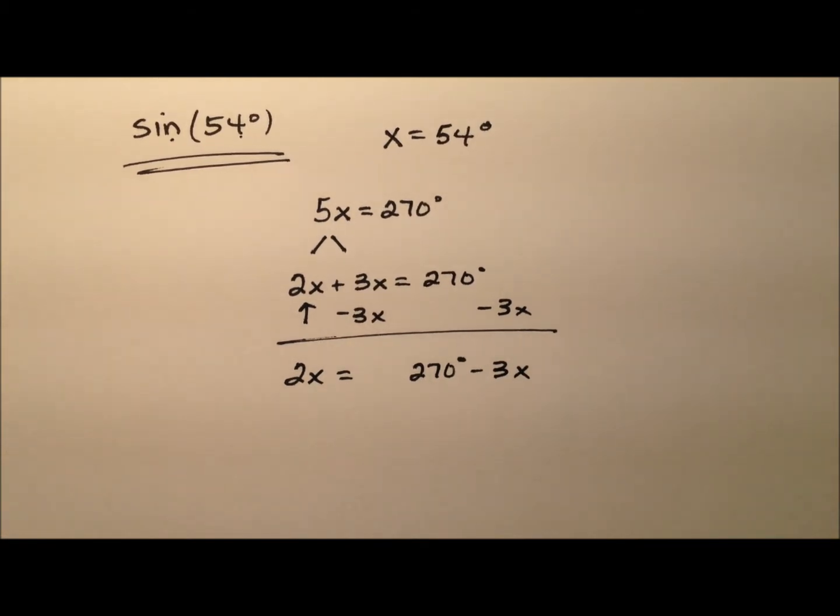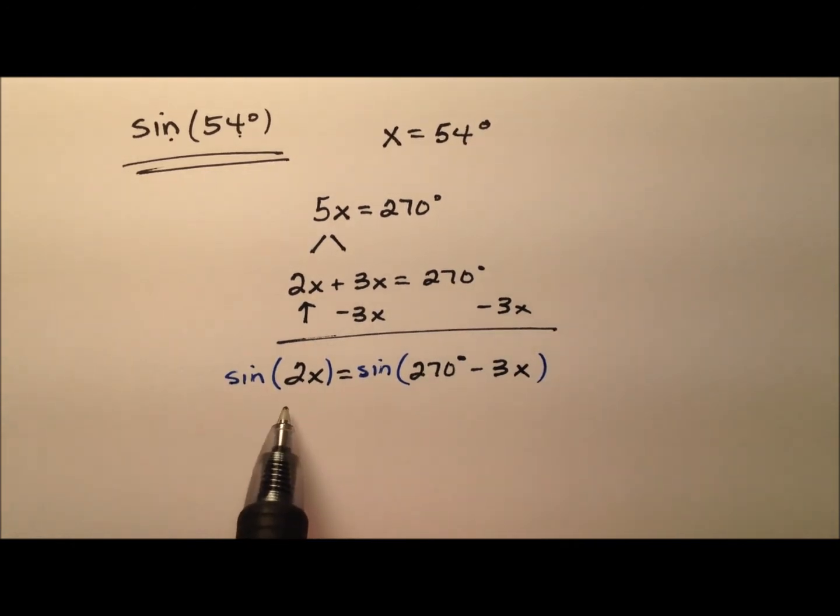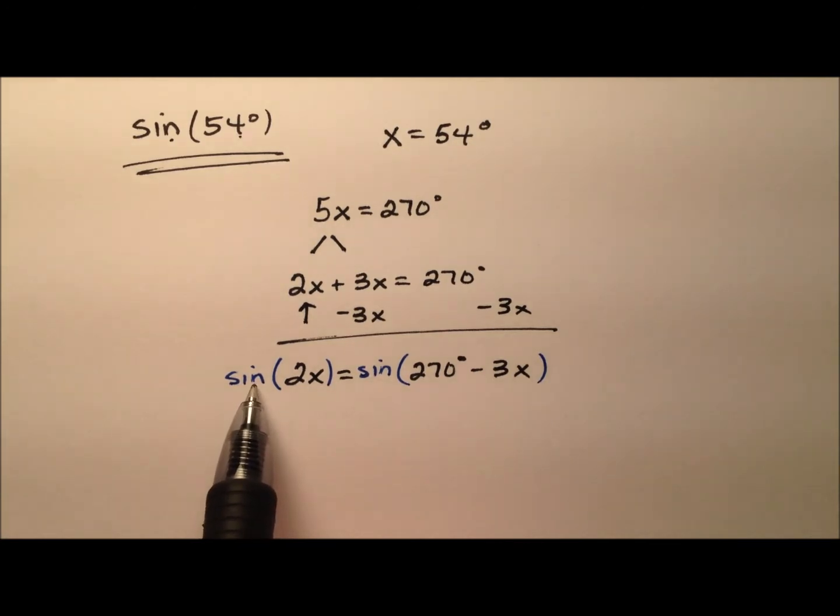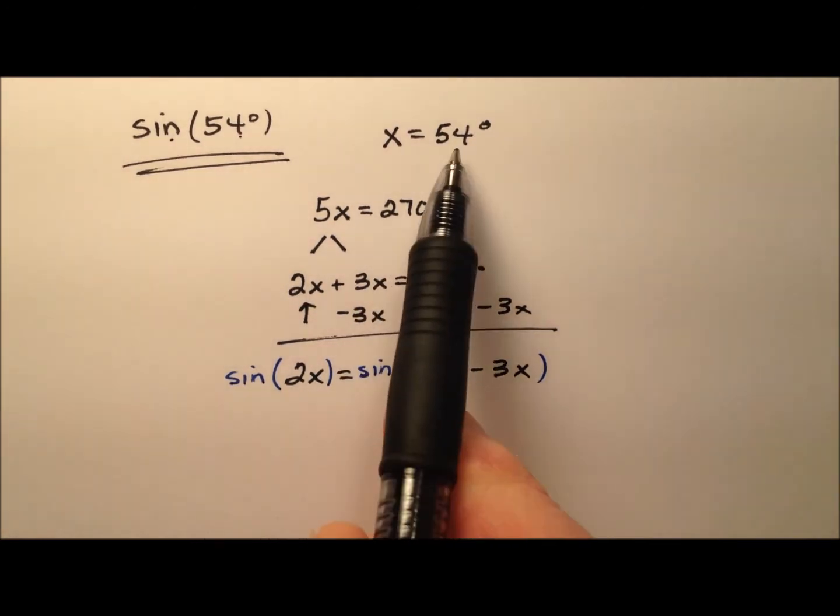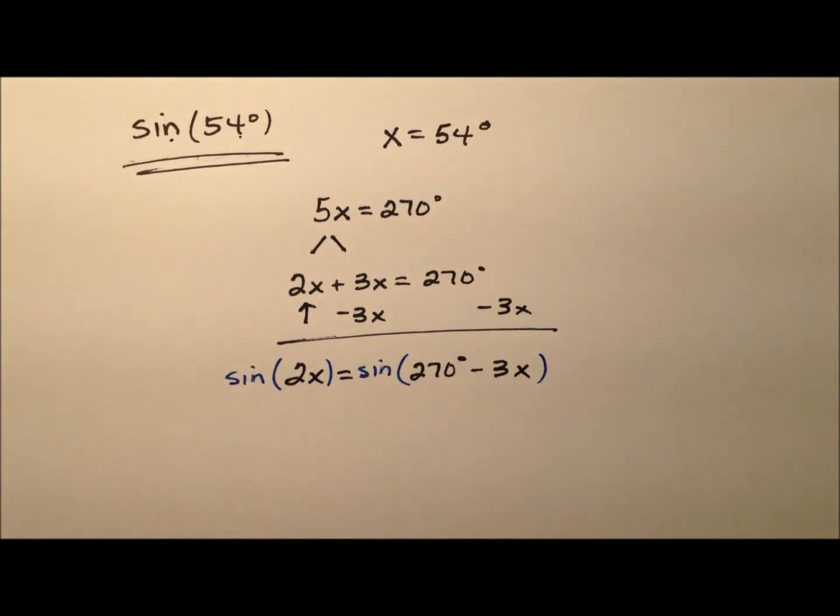And what I can do at this point is I'm going to take the sine of both sides of this equation. And now I have a really nice looking trig equation. And whenever I can solve for sine of x, since x is 54 degrees, I'll be solving for the sine of 54 degrees.